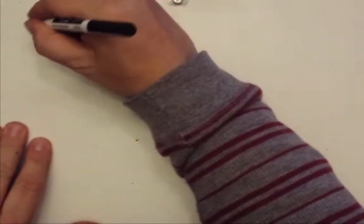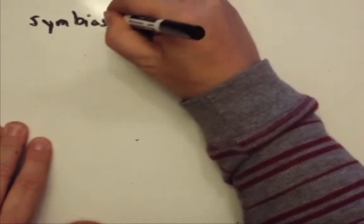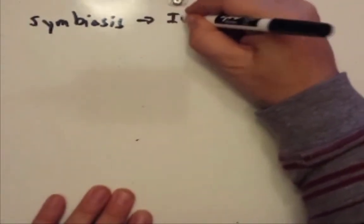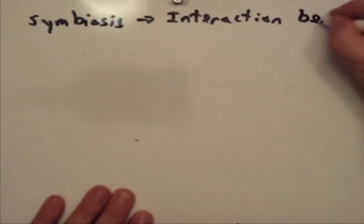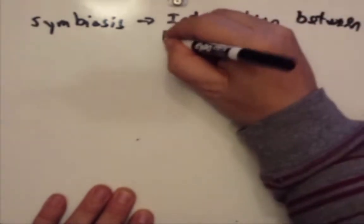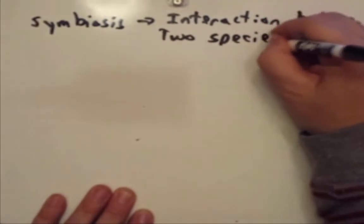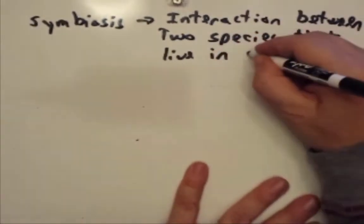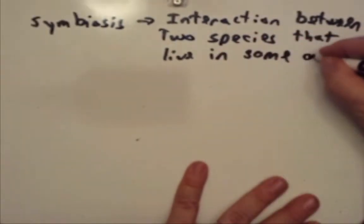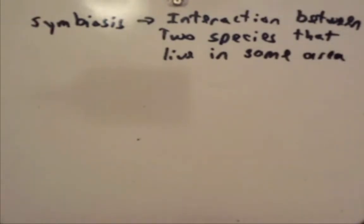Bacteria play a really important part in our ecosystem in the role of symbiosis. Symbiosis is an interaction between two species that live in the same area. We can break symbiosis down into more specific terms, and that's what we'll do.